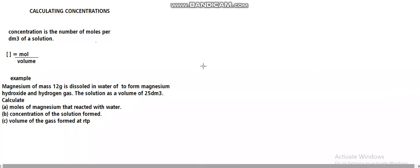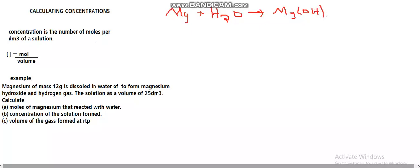We know it's magnesium, so I'm going to write the equation here: magnesium plus water, making sure the equation is balanced, giving magnesium hydroxide. Remember magnesium is in group 2, plus hydrogen gas.